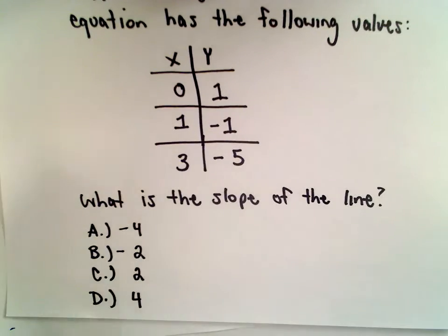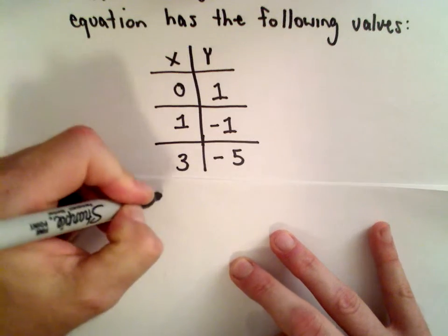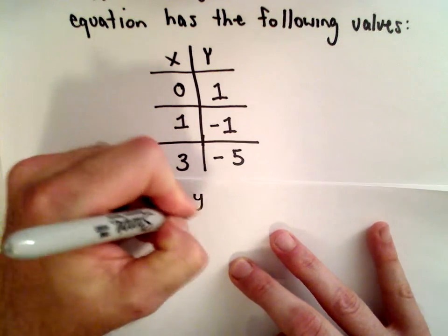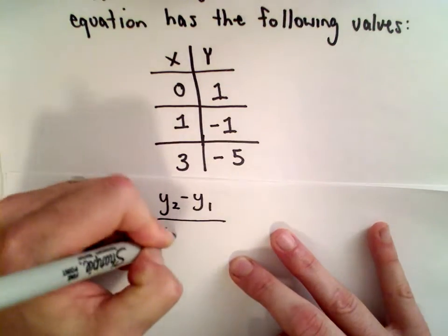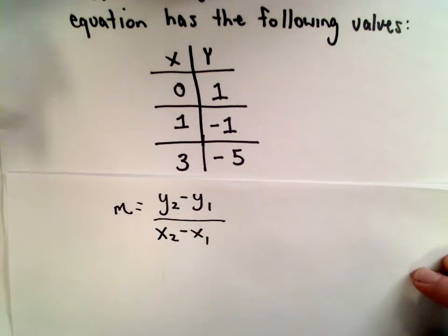This is just an application of using that slope formula. m equals y2 minus y1 over x2 minus x1. And to use this formula, all you need, you only need two points.